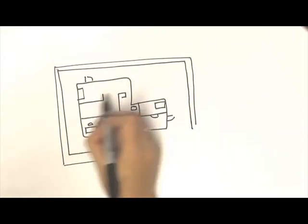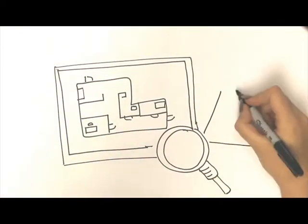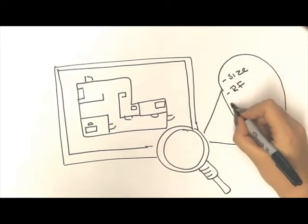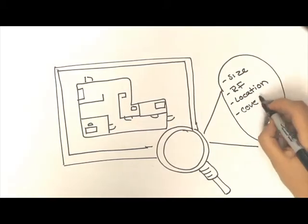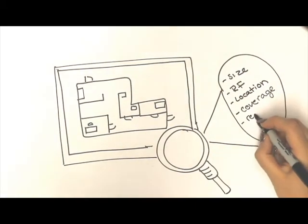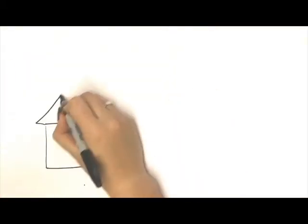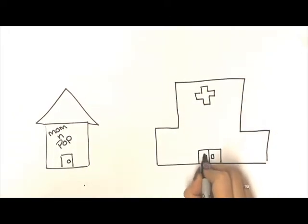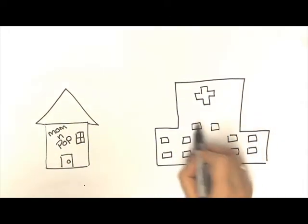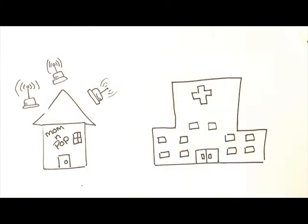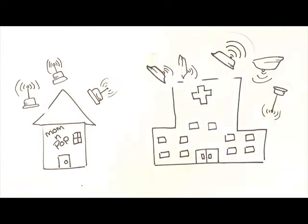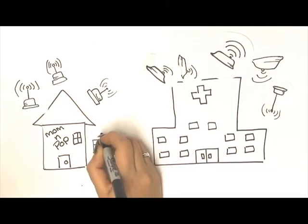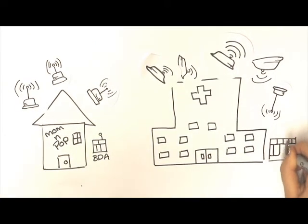We start by analyzing the current radio or commercial carrier system in your business. This includes the bands and frequencies of those systems. We will also analyze the area of coverage desired. Coverage and hardware size are typically proportional. We can install these systems into the smallest office or the largest hospital.